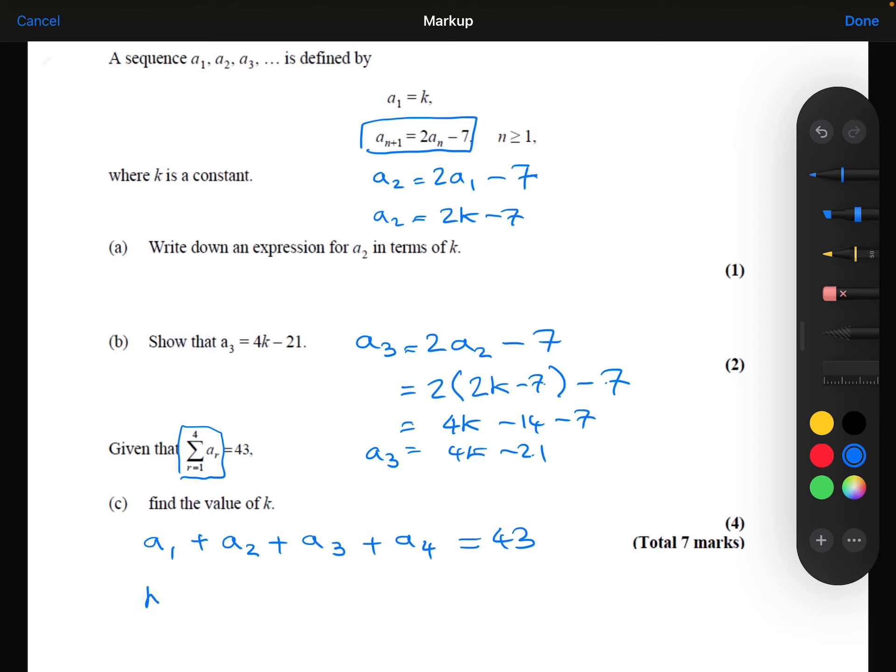Now, a₁ was k, a₂ was 2k minus 7, a₃ was 4k minus 21. I've not worked out what a₄ is yet, but I can work that out.